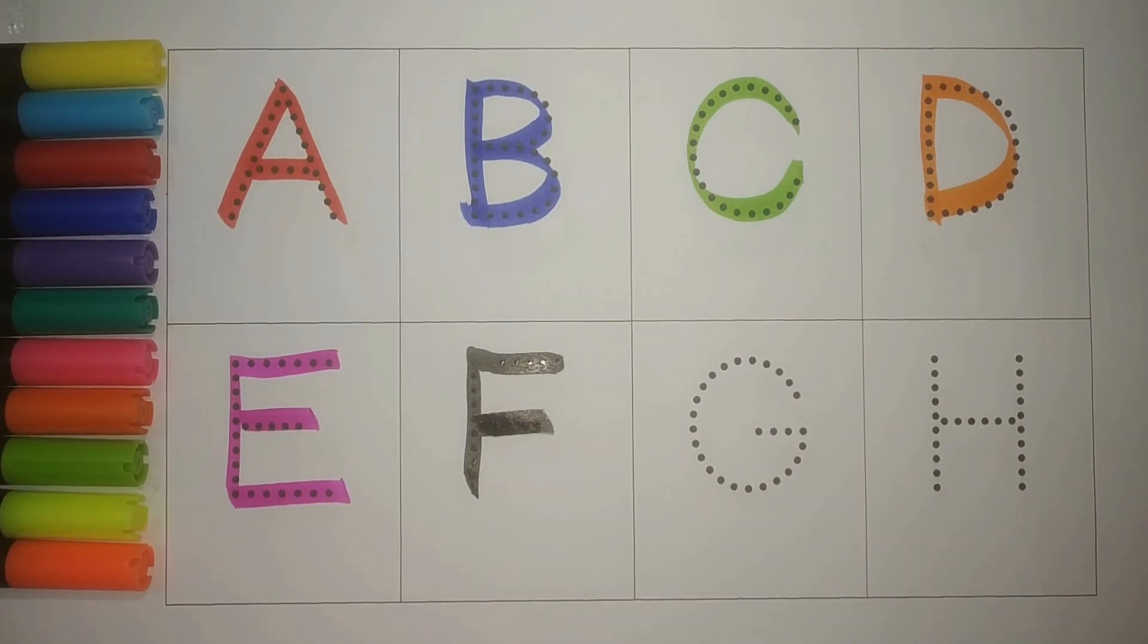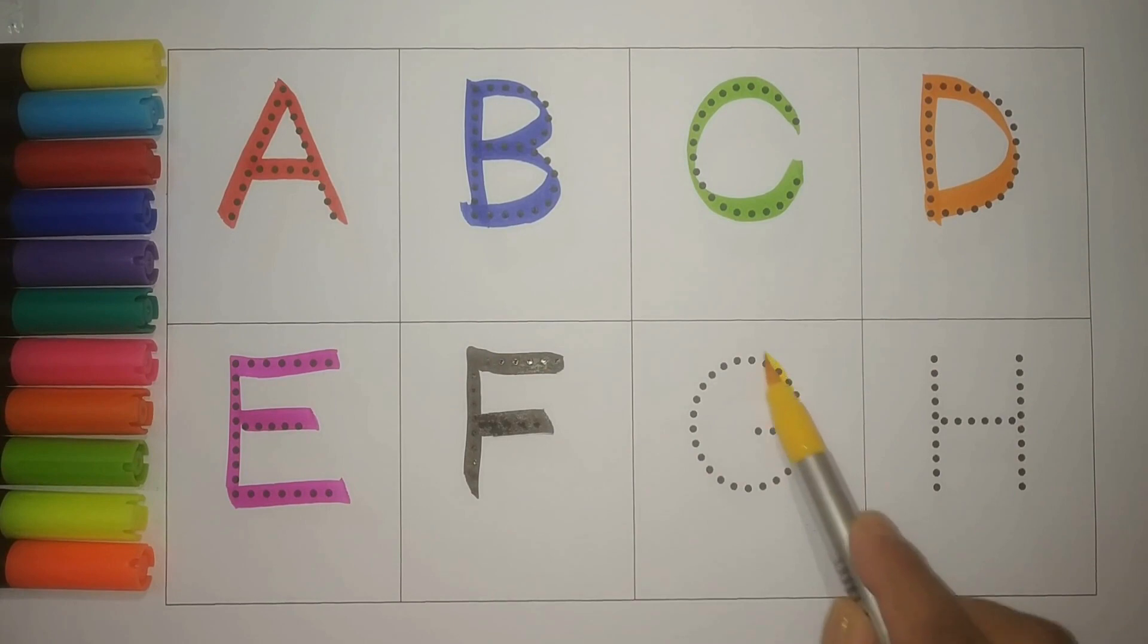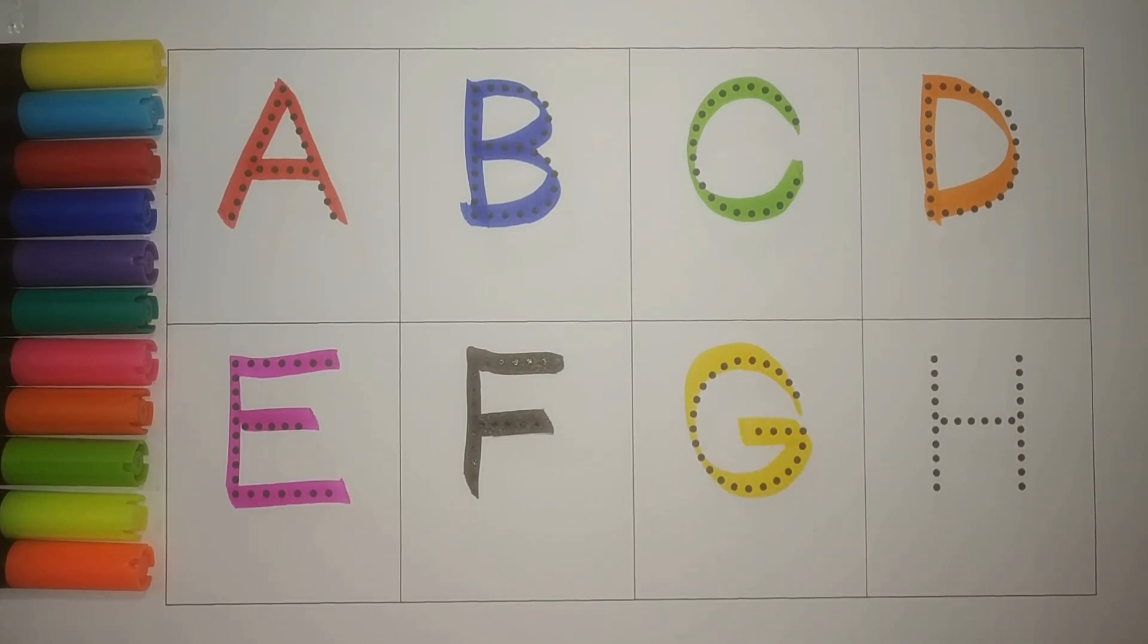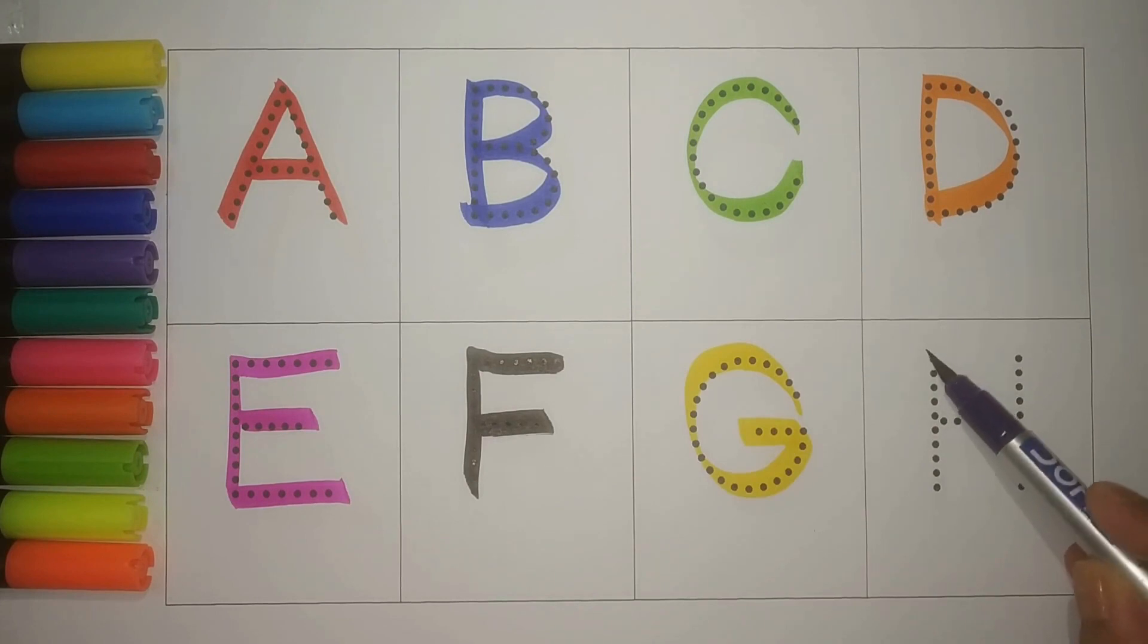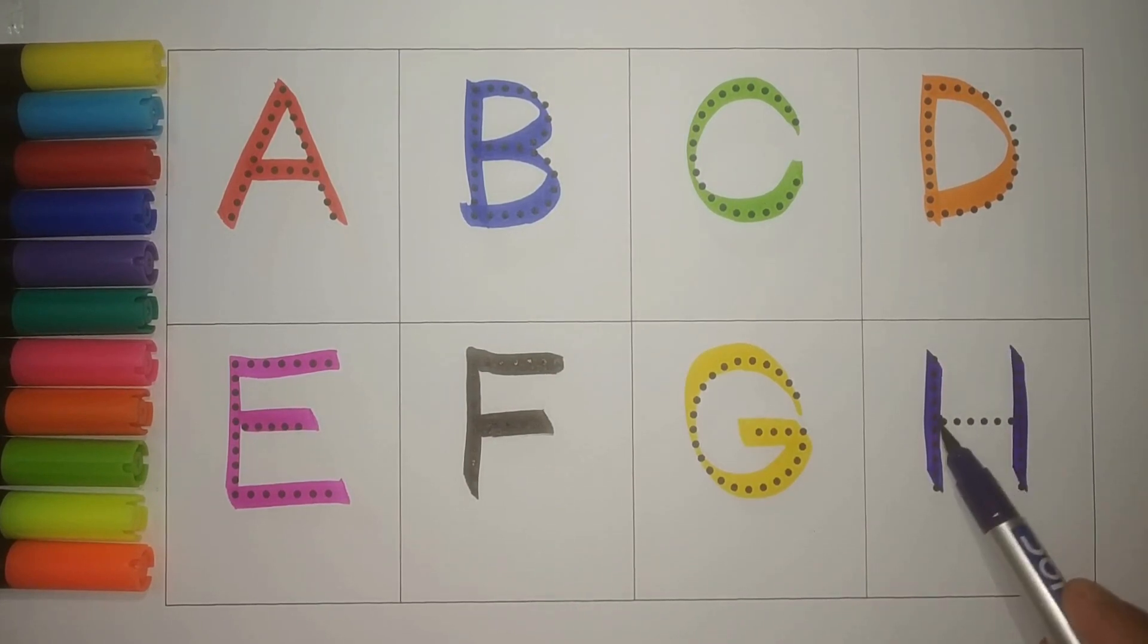Yellow. G, G for goat, bakri, meh. And purple. H, H for horse, khoda.